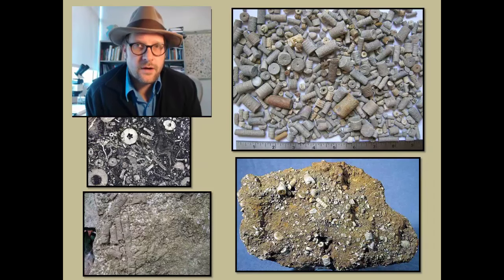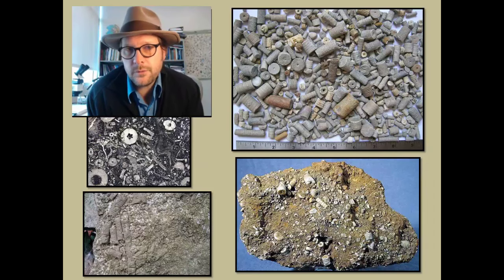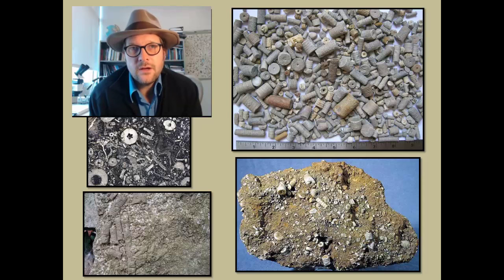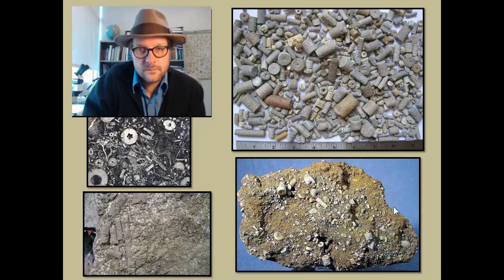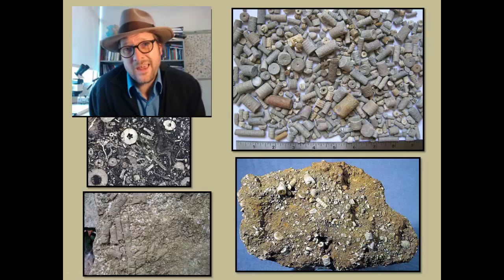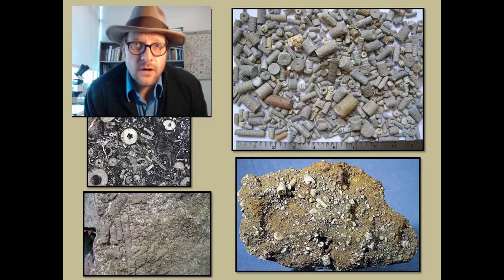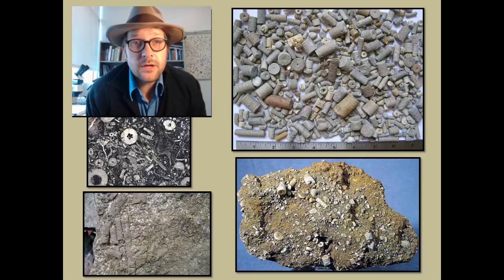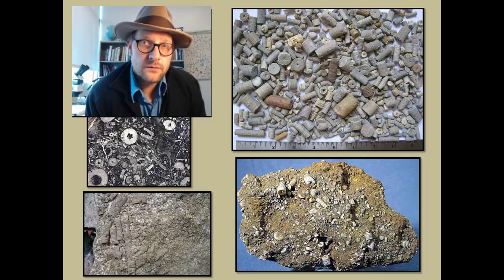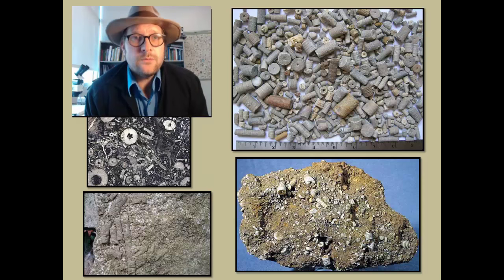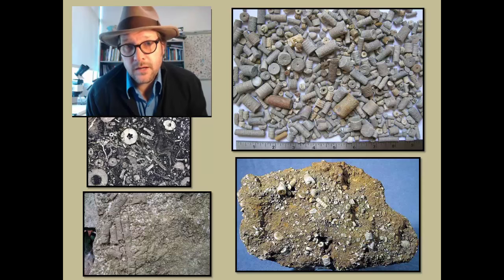Crinoids are extremely common in the fossil record, but rarely do the calyx or brachials preserve. Most often it is the columnar plates which, when examined along the transactional surface, exhibit a five-pointed star. These fossils also resemble stacked coins and can be found in many fossil collections. Because it is often the columnar stalks that are preserved, we don't necessarily have a complete picture of what living crinoids might have looked like until we find the calyx or brachials. In many limestones, the crinoid stems make up a majority of the framework of the limestone's calcium carbonate matrix.